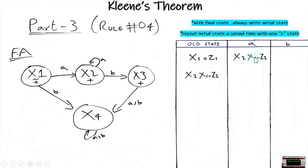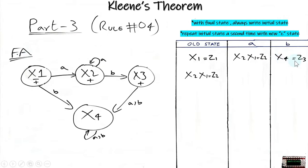Now for the next input: we are in x1 and when we get input b it goes to x4. We name this z3, and since it is a new state we write it in the old state column.